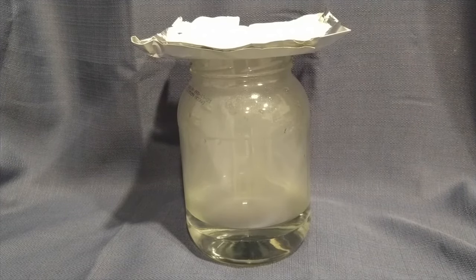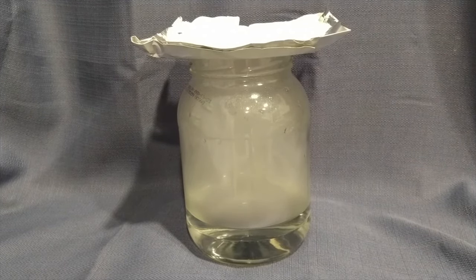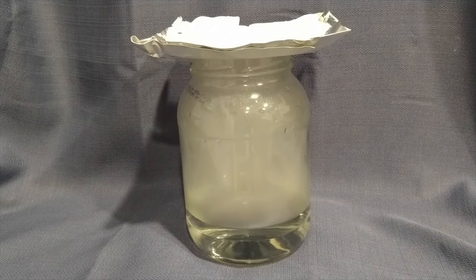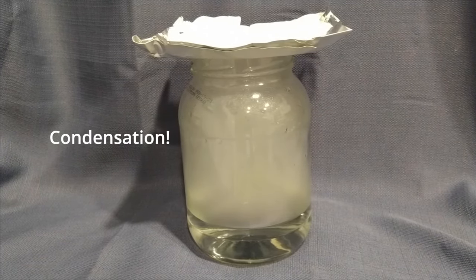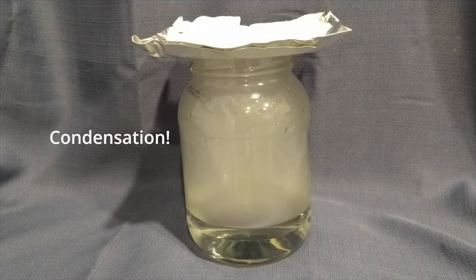When warm wet air meets cold air, they create a cloud of water droplets, which has formed into a cloud in this jar. This is what we call condensation. It is just a smaller version of what happens in the sky every day when clouds form.